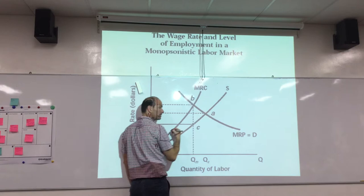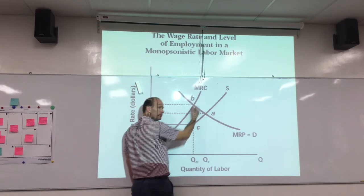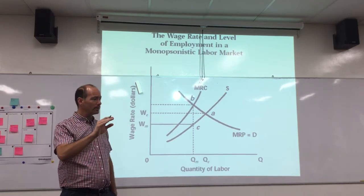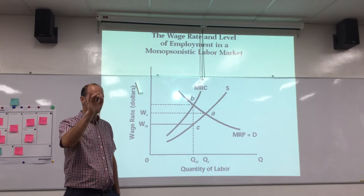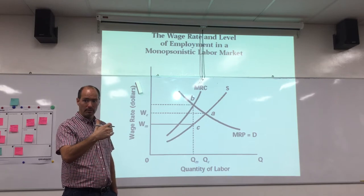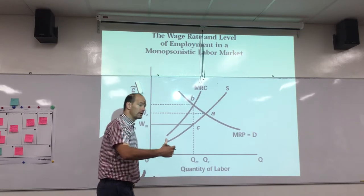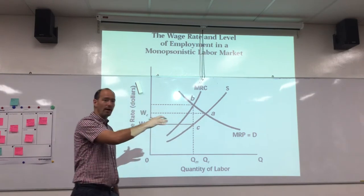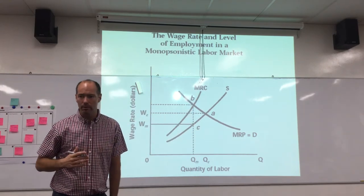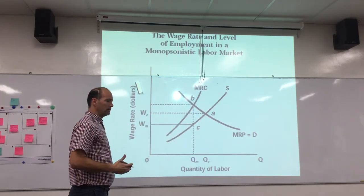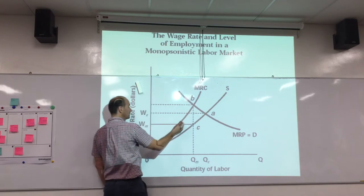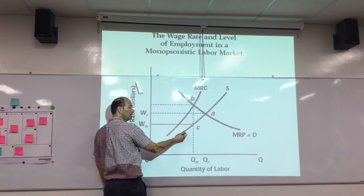If the supply curve is upward sloping, you can have a marginal resource cost (MRC) curve which is above the supply curve. Because when you hire one new worker, you now have to pay all your workers the higher wage. So it's not just the additional worker you pay the higher wage — you pay all workers the higher wage. Thus, the marginal resource cost is actually greater than the wage you pay that worker; the MRC curve is always above the supply curve.